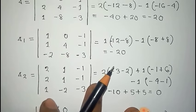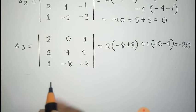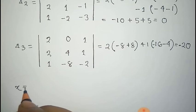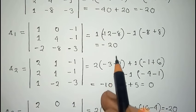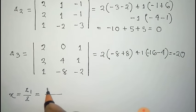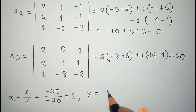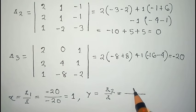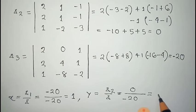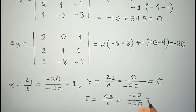Now we can easily find x, y, z from these values. The value of x is Δ1 divided by Δ, which is minus 20 divided by minus 20, that is 1. And y is equal to Δ2 divided by Δ, which is 0 divided by minus 20, that is 0. And z is equal to Δ3 divided by Δ, that is minus 20 divided by minus 20, which is 1.